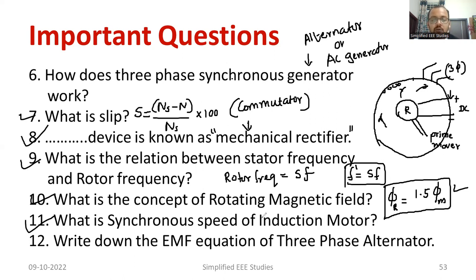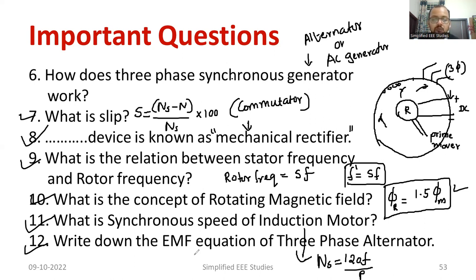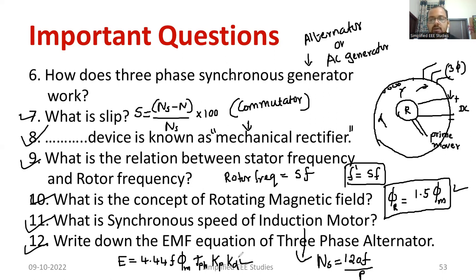What is the synchronous speed of an induction motor? Synchronous speed is the speed of the rotating magnetic field, given by 120F/P, where F is the supply frequency and P is the number of poles. Write the EMF equation of a three-phase alternator: it is given by 4.44 × F × φM × T_phase × Kp × Kd, where Kp is the pitch factor and Kd is the distribution factor.